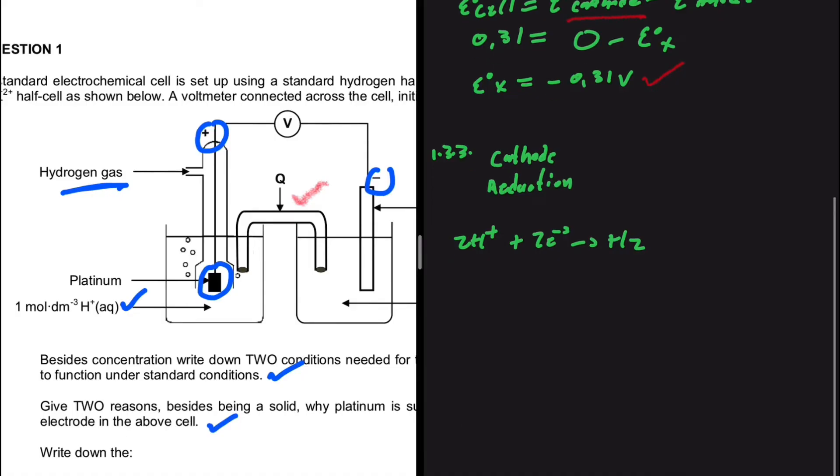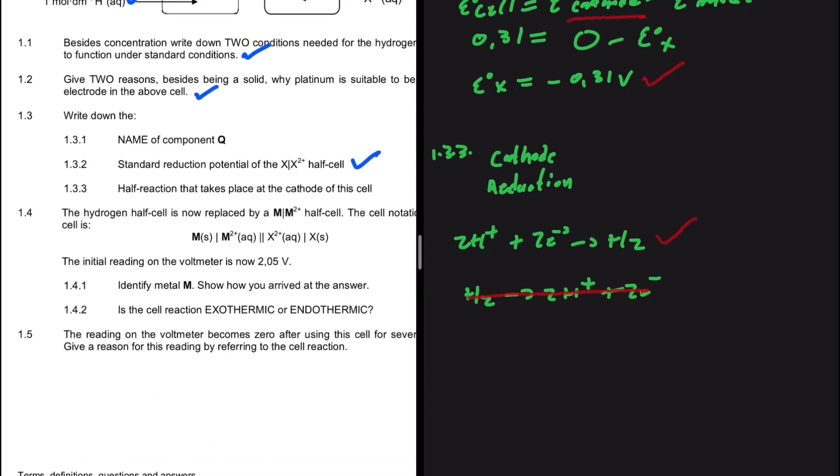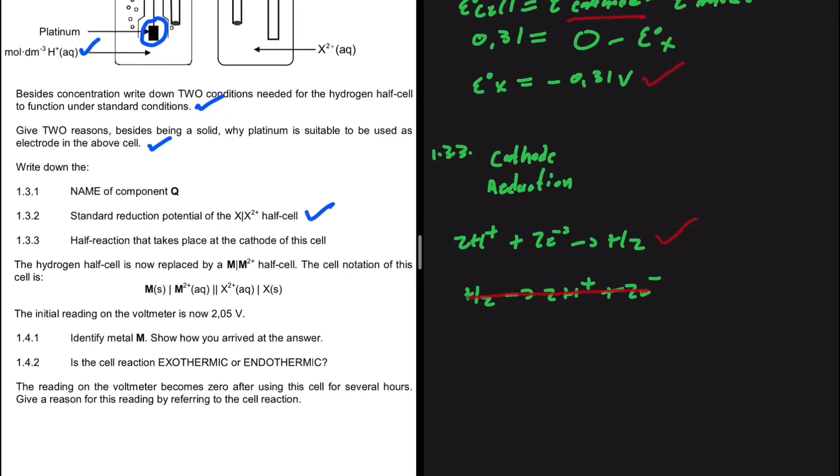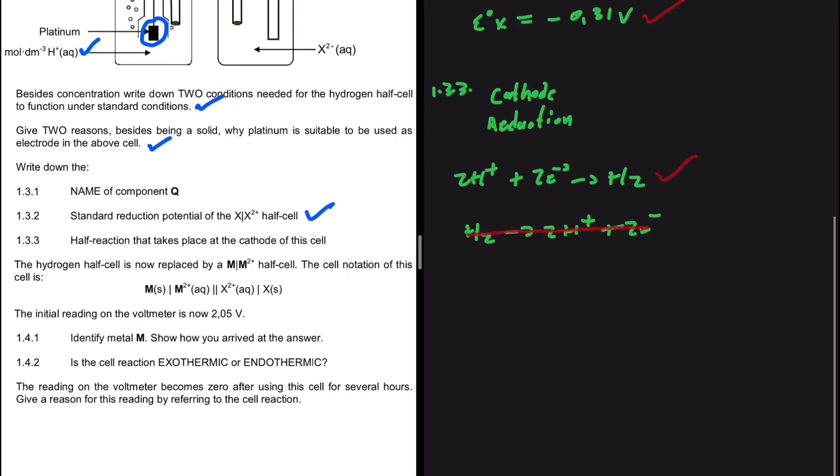If this was the anode, then we would write the equation in the following way. We'd have hydrogen gas H2 giving us 2H+ plus 2 electrons if it was at the anode. If it is at the cathode and reduction is taking place, then this is our equation. I'm just doing that for the sake of clarity when you have equations which require the half reaction at the anode.